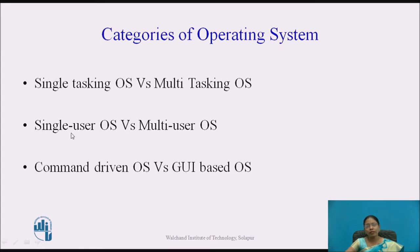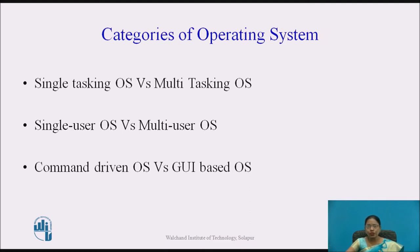The second category is single user OS versus multi-user OS. In a single user OS, only a single user is using the operating system — for example, Windows is a single user operating system. In a multi-user operating system, multiple users share the operating system through time sharing and time division multiplexing. The example of a multi-user OS is Unix, where every user feels as if they alone are using that operating system.